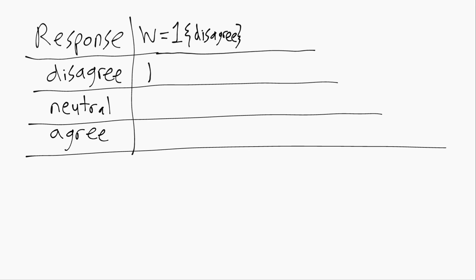When the response is neutral, that's not disagree so the indicator function evaluates to zero and w is zero. Similarly when the response is agree, the indicator function evaluates to zero and w is zero.